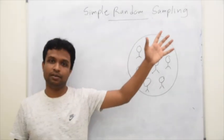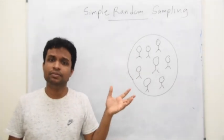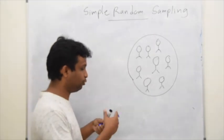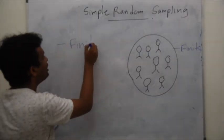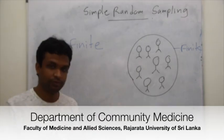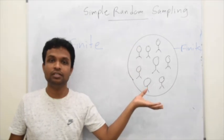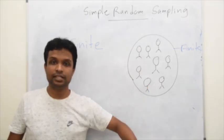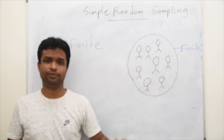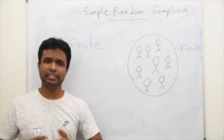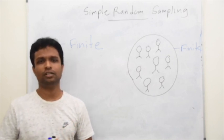In simple random sampling, we generally apply simple random sampling for finite populations. That means all the individuals of the population must be able to list. We need to have a list of individuals in the population. That means generally we apply simple random sampling for small populations.